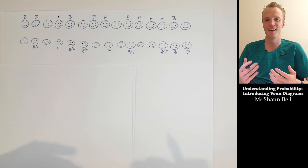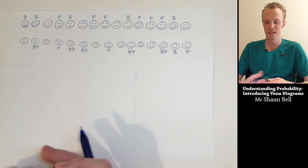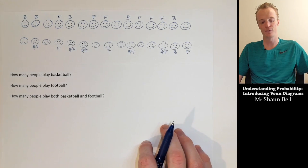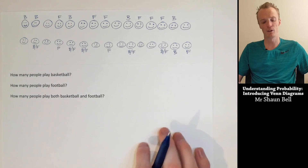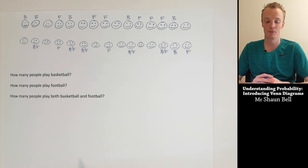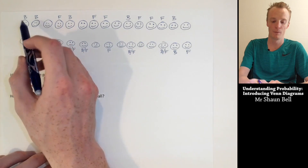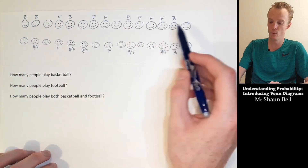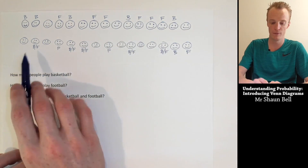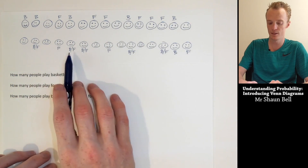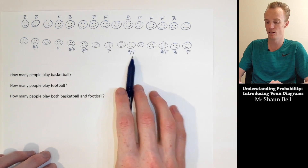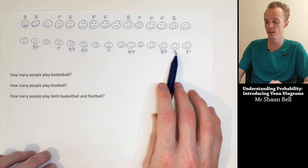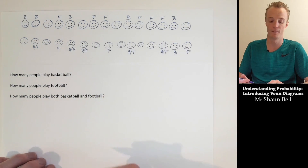Before we get into how we fill out a Venn diagram, let's pull some information from this survey. First of all, let's have a look at how many of these people played basketball. Counting them up, we get 11 people that play basketball.